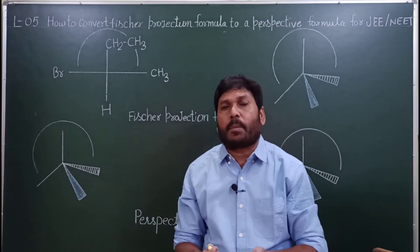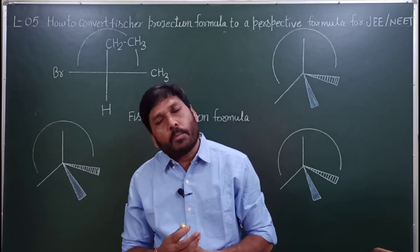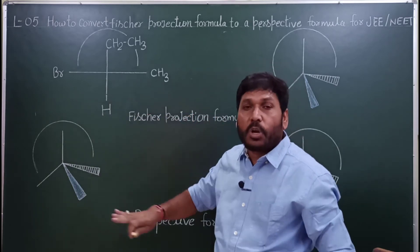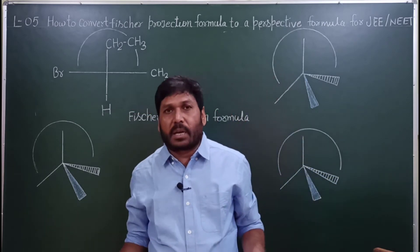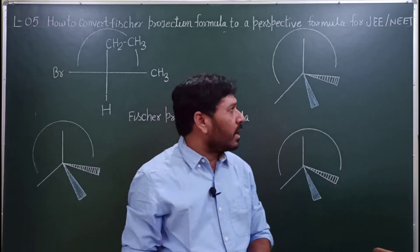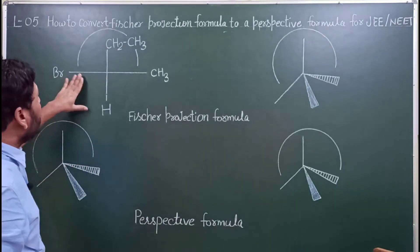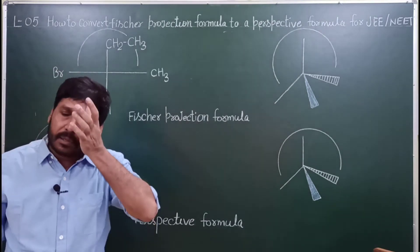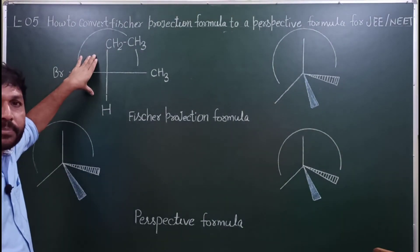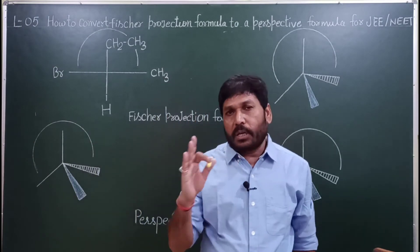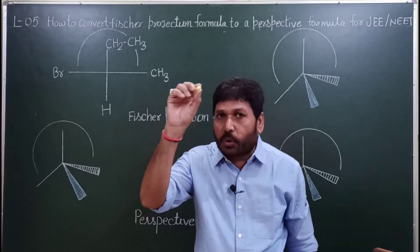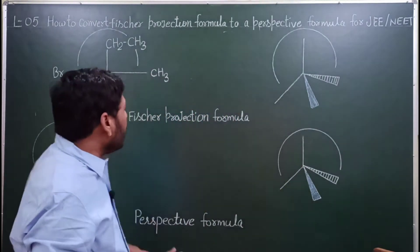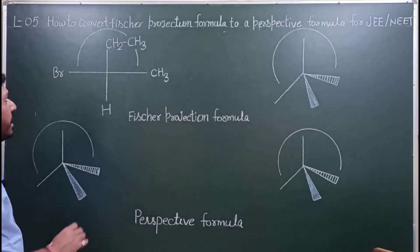आज का जो वीडियो है वो basics of organic chemistry से है, जिसमें आपको पूरी organic chemistry के basics सिखाने वाला हूँ। आज हमें क्या करना है — Fischer projection formula को perspective formula में convert करना है। अगर ये structure दिया हो तो हम कैसे पहचानेंगे ये दोनों formula right हैं — वो एक simple trick से सिखाने वाला हूँ। सबसे पहले हमें इसका configuration देखना है — ये R configuration है या S configuration है, या clockwise rotation में formula है या anti-clockwise rotation में है।